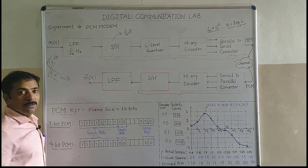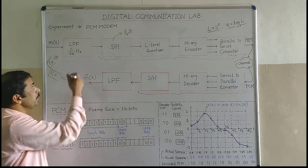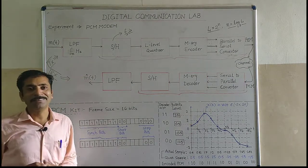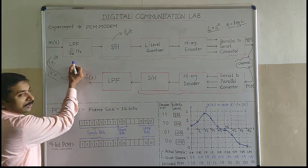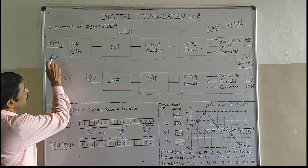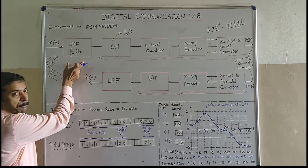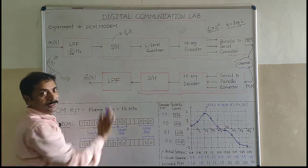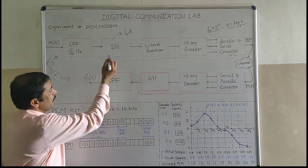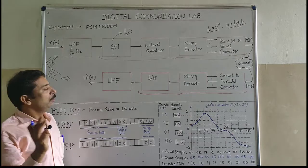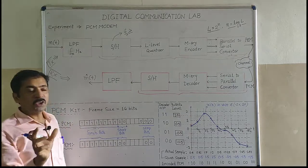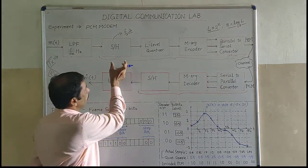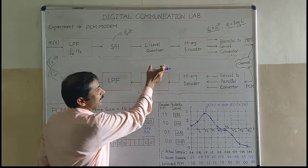The alternative name of this filter is called the anti-aliasing filter. This anti-aliasing filter is used to make the signal perfectly band-limited, and then it is given to the sample and hold circuit. Essentially, I have three building blocks of the PCM modulator: sampling, quantizing, and encoding.